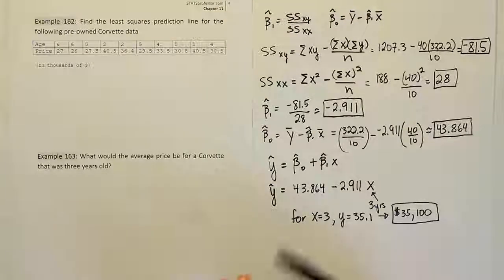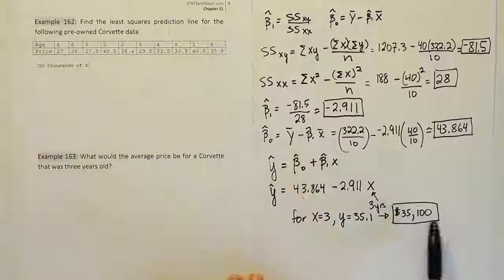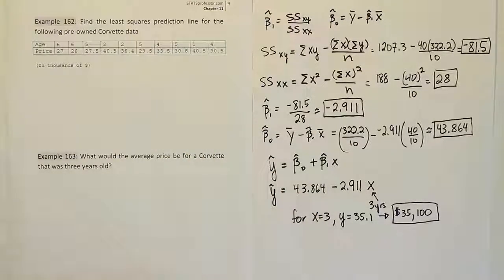Of course, the only thing this model is considering is age. And so this average is averaging across all the different conditions, the different colors, the different options that are on the car, all those different qualities that would make the price be different is going to mean that this is only the average price. Obviously, a car in better shape would probably be above average in price. A car in worse shape would be below average. A car with an excessive amount of miles would be below average. A car with less miles would be above average. But this is roughly what we're predicting the average price to be for a three-year-old Corvette. And that's it.